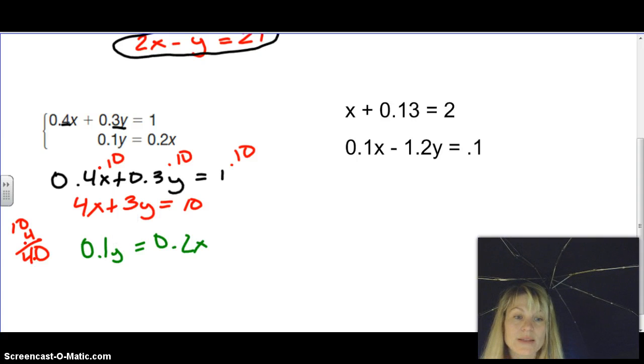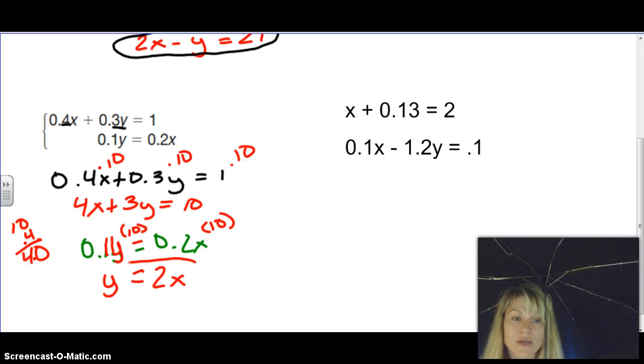So I'm going to multiply this one by 10. So we're going to times this one by 10 and times this by 10. So then 0.1 times 10 gives you 1y or just y. And 0.2x times 10 will give you 2x. So again, we have two nice equations now that we're going to do some math with later. But the first step is to making them look nice.